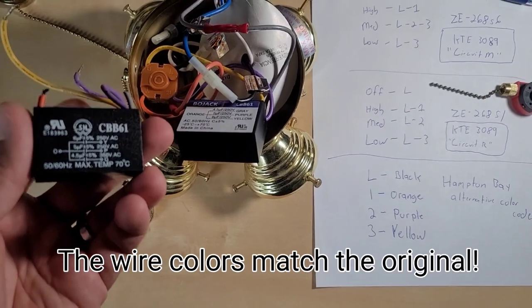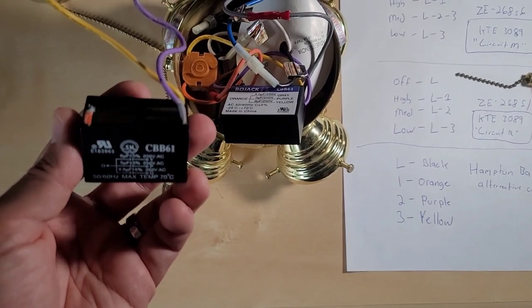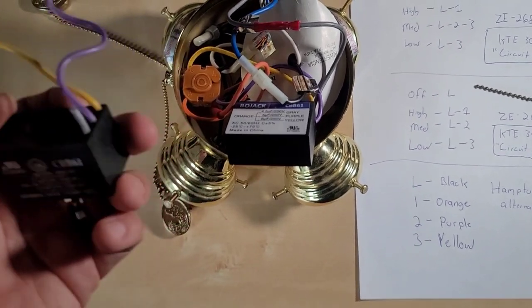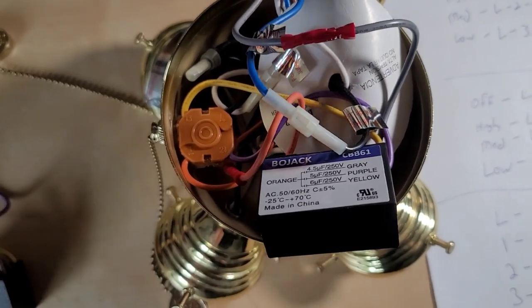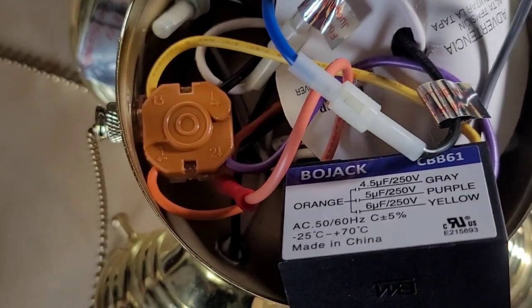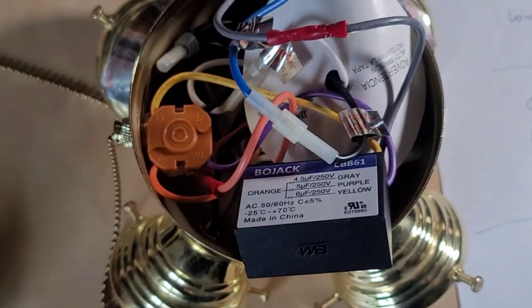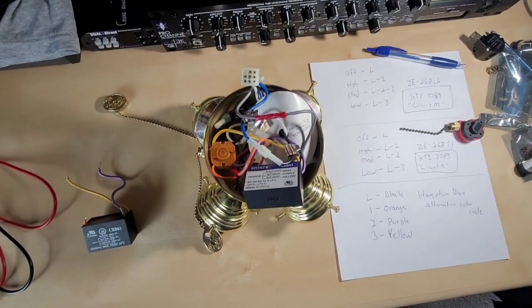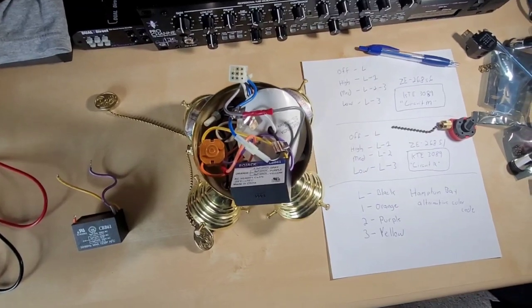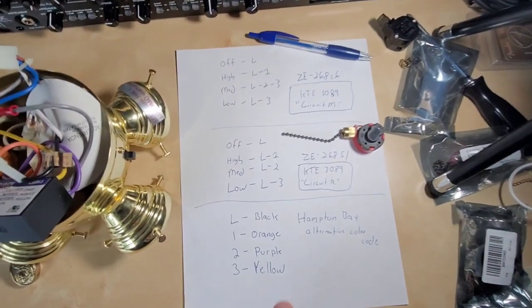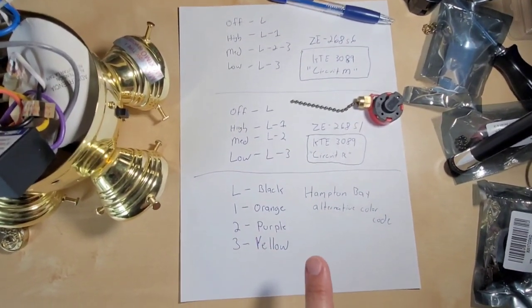It's a CBB61 which is the part number that you would normally find for a three speed fan. Inside here is the switch that I had replaced and what's interesting is that the switch is not what you might think.